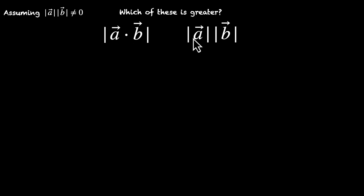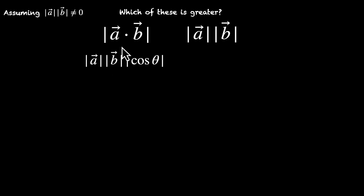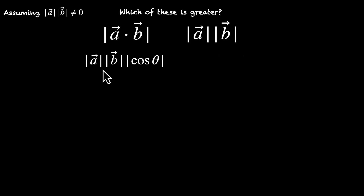Pause the video and think about which side is greater. Alright, let's do this together. This dot product is actually equal to mod of vector a times mod of vector b times cos of theta. And when you take the mod of this entire thing, you'll get mod of cos theta as well — all three things are in mod. Now let's compare both sides. This side has mod of vector a times mod of vector b. This side also has those two things, but it also has something extra: it has mod of cos theta.